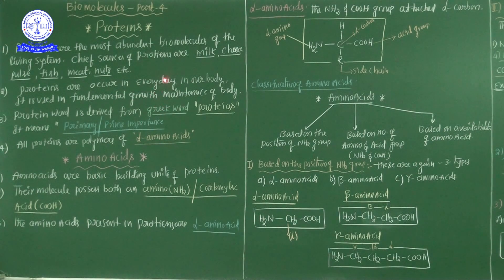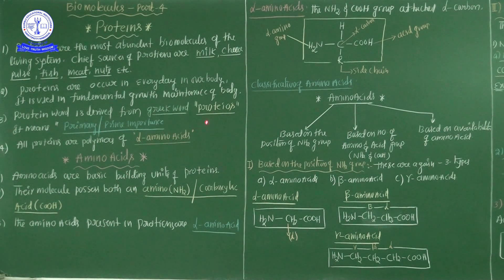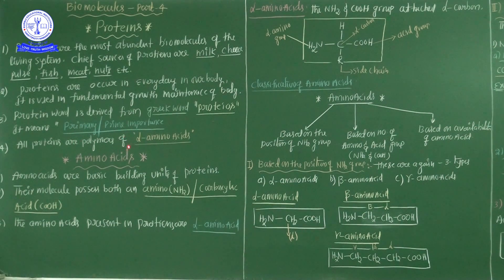This is the introduction of proteins. Protein is the most abundant biomolecule in the living system. The cheap sources are milk, cheese, pulses, fish, meat, nuts, etc. Proteins are used for the fundamental growth and maintenance of the human body. All proteins are polymers — combinations of alpha amino acids. Now we will study amino acids first.